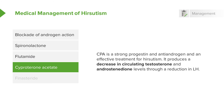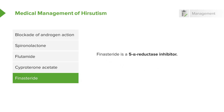In the US, we do not have access to CPA; however, in other countries they do. This is a strong progestin and an antiandrogen that decreases circulating testosterone and androstenedione. Finally, there's finasteride, which is a 5-alpha-reductase inhibitor.